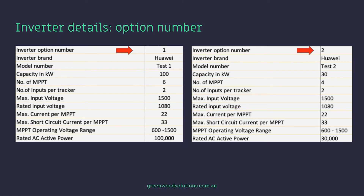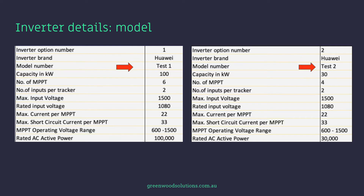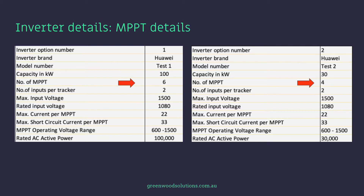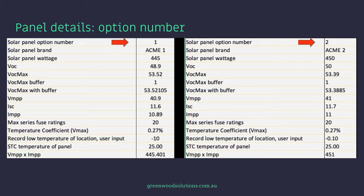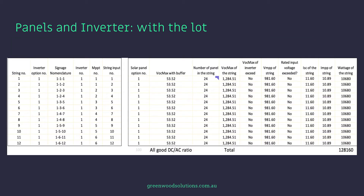In regards to inverter details, we're looking at the option number, the brand, the model, the capacity in kilowatts, the maximum power point tracker details, and various other things. With panels, we're looking at the same. In this slide you can see we've got the string number, inverter number, signage, MPPT number, string number, and all the things that we covered previously.